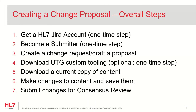The first requirement is an HL7 JIRA account. HL7 members should already have an account, which grants access to both the UTG JIRA project and the Confluence pages that hold the UTG documentation. You submit a request to become a submitter, as special permissions are required to submit a proposal. You then create the change request through the UTG JIRA project, including all of the detailed information related to the requested changes. We have made specialized UTG tools available for those who are not intimately familiar with GitHub and the FHIR XML resources.